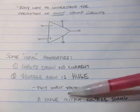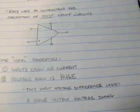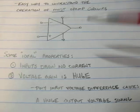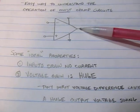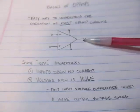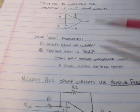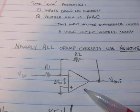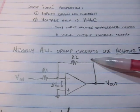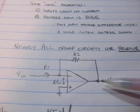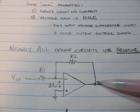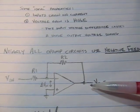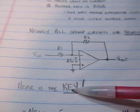These two properties will really help us to understand how almost all op-amp circuits work by taking one more factor into account, and that is that nearly all op-amp circuits use negative feedback in some form. Here's a really simple form, just a resistor negative feedback here. Let's look at why that's important - and this is really the key.